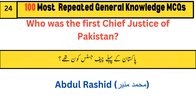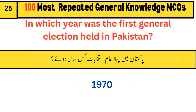Who was the first chief justice of Pakistan? Abdul Rashid. In which year was the first general election held in Pakistan? 1970.